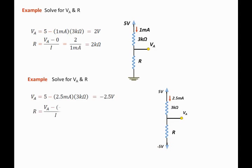By Ohm's law we can state that R is equal to VA minus negative 5 over I. It's the top voltage minus the bottom voltage over the current.